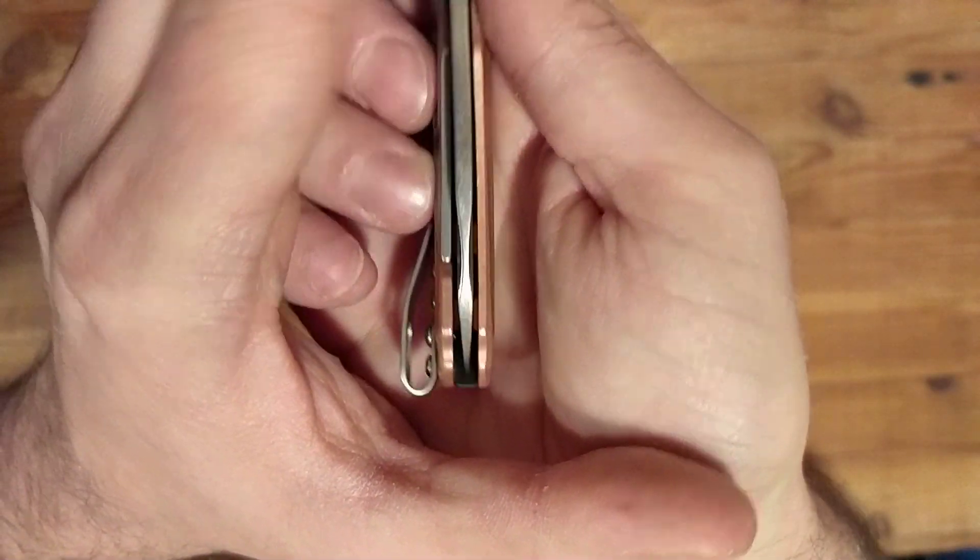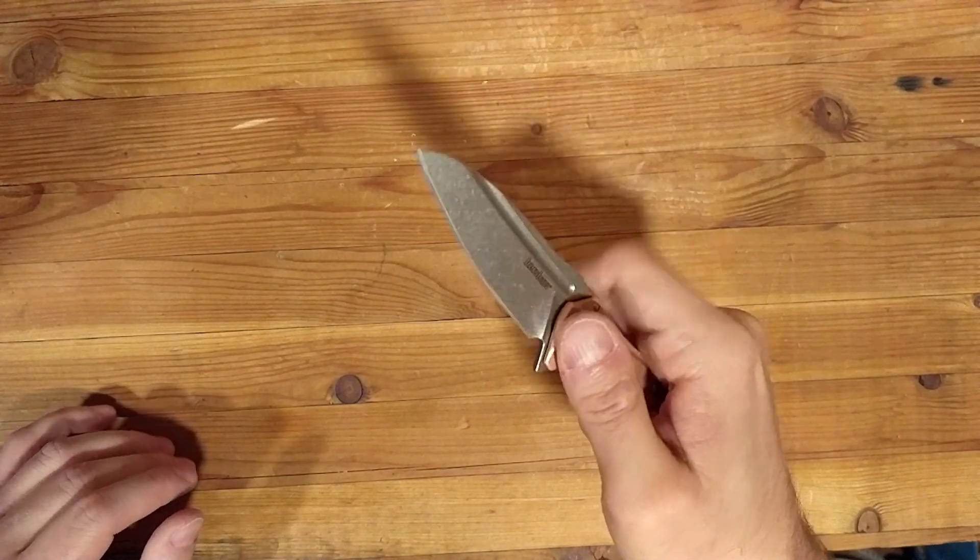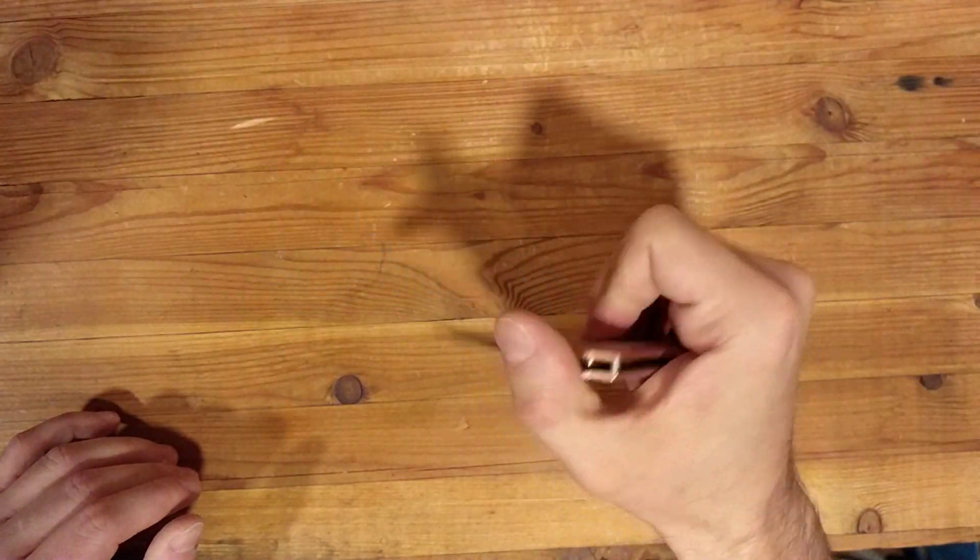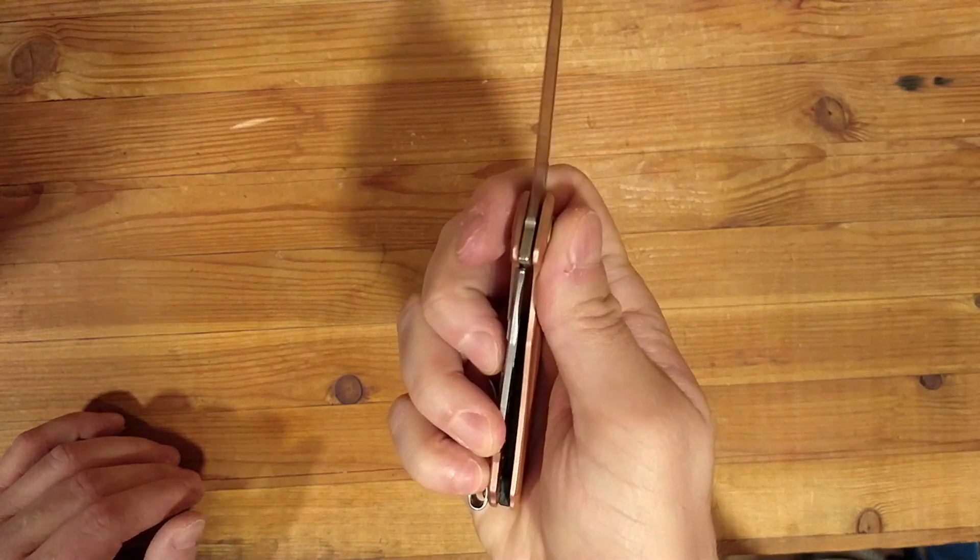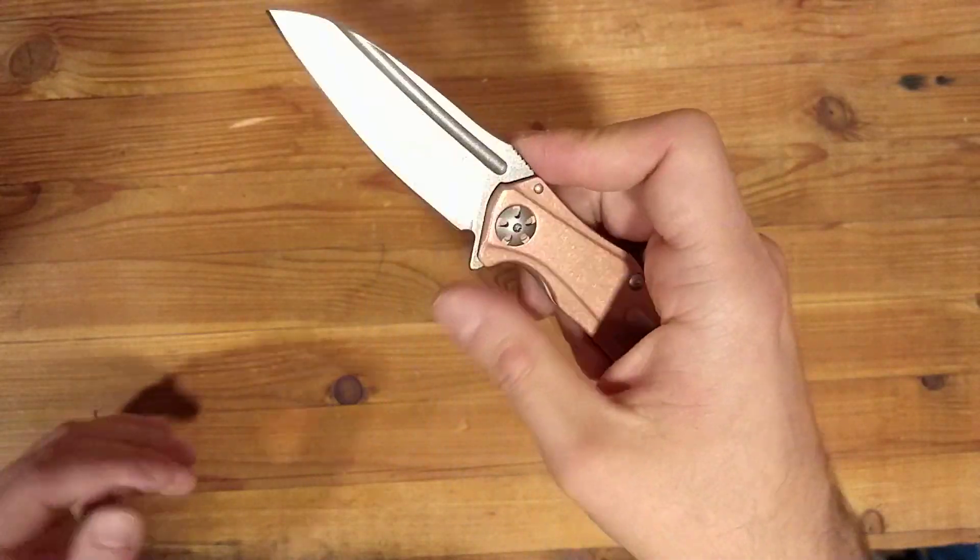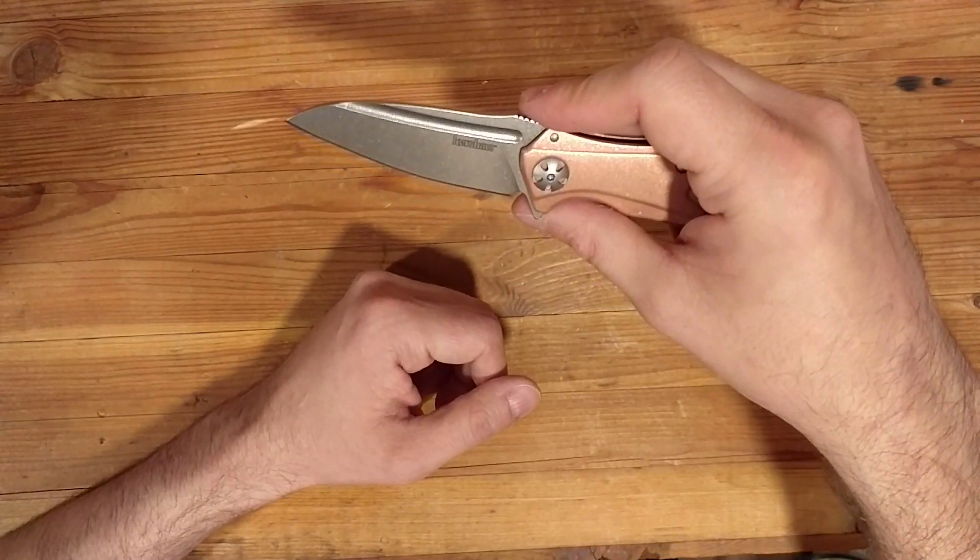And the centering. Centering's on and action. So it's a manual flipper, nice and smooth, good lockup and it's a modified sheepsfoot blade in D2 steel.